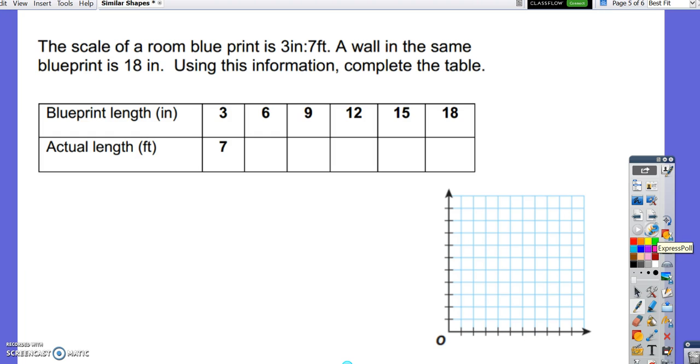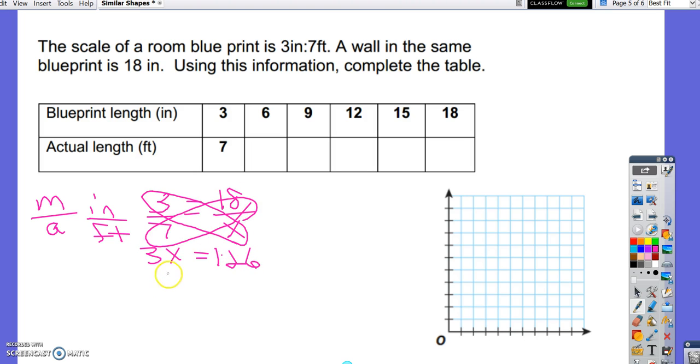The scale of a room blueprint is 3 inches to 7 feet. A wall in the same blueprint is 18 inches. Use this information and complete the table. So we can do model over actual, inches over feet, 3 inches, 7 feet, equals 18 inches over x feet. We can solve the proportion. 3x. 18 times 7 is 126. 126 divided by 3 is 42.